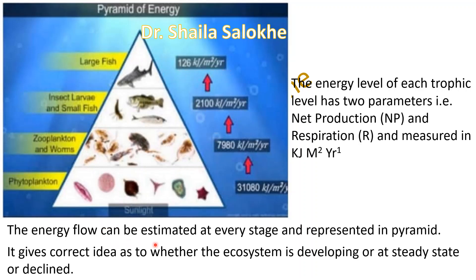The energy flow can be estimated at every stage and represented in pyramids. It gives a correct idea as to whether the ecosystem is developing, at steady state, or declining. If the ecosystem is developing, there is a slight increase in energy level at each trophic zone. If it is at steady state, there is no much fluctuation in energy. If it is declining, there is a decrease in the energy flow through the different trophic levels of the ecosystem.